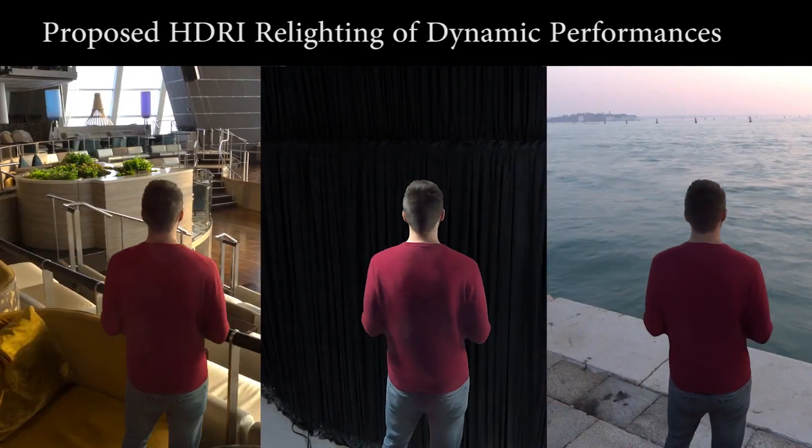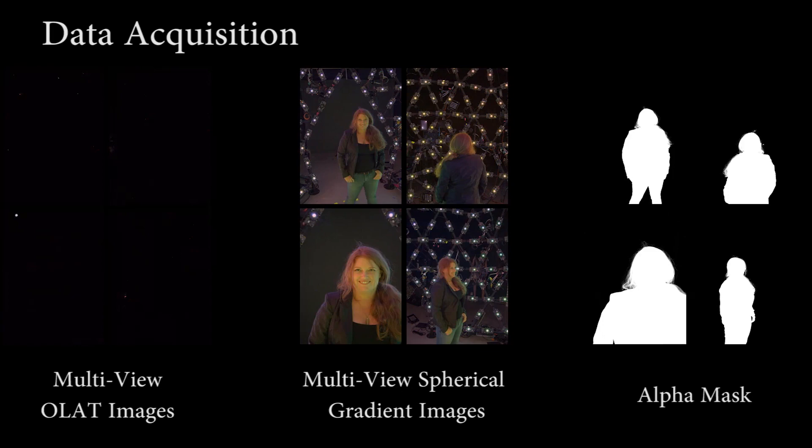Our system leverages a light stage to capture the subject under two color gradient illumination conditions, as well as 331 one-light-at-a-time conditions. Our deep architecture is trained to map the color gradient images to the one-light-at-a-time images.